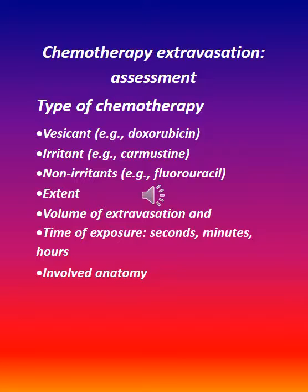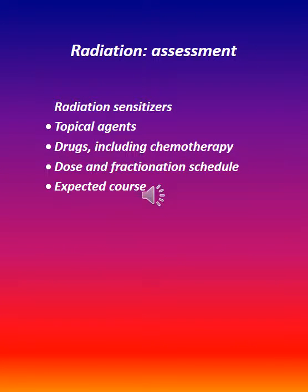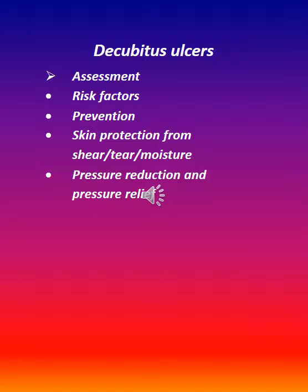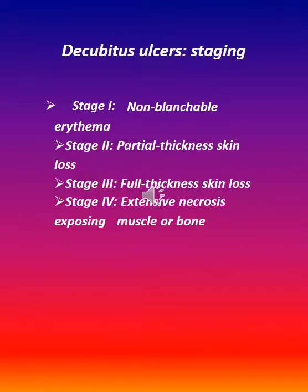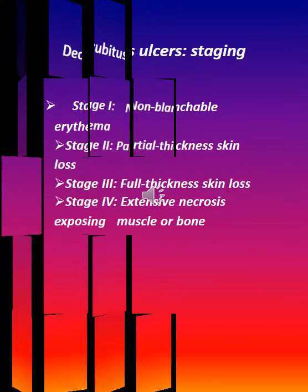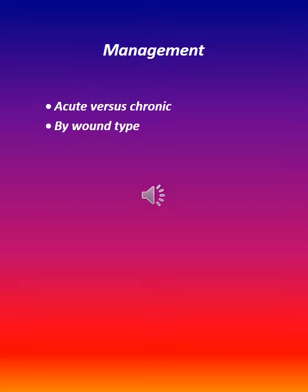Involved anatomy. Radiation assessment considers radiation sensitizers, topical agents, drugs including chemotherapy, dose and fractionation schedule, and expected course. Decubitus ulcer staging: Stage I — non-blanchable erythema; Stage II — partial thickness skin loss; Stage III — full thickness skin loss; Stage IV — extensive necrosis exposing muscle or bone.